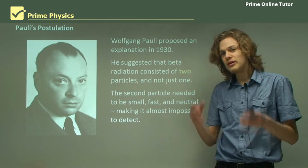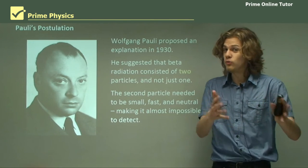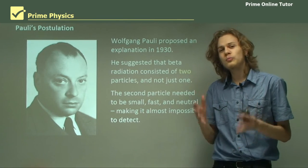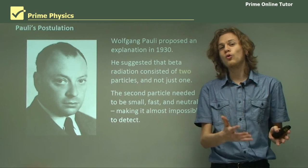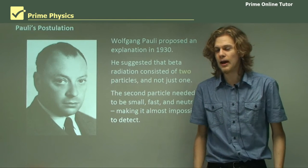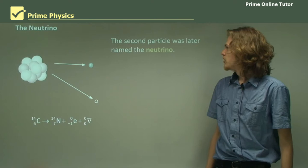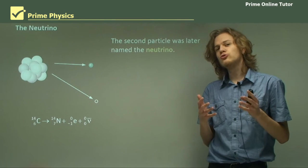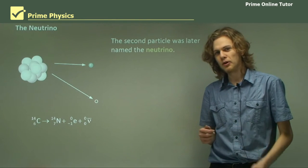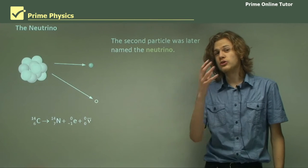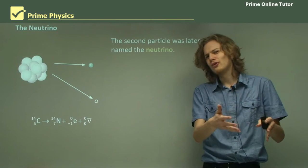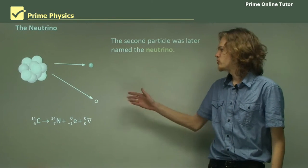The second particle would be small and massless so that it couldn't be detected, but it would have lots of speed and momentum so it could carry off all the missing energy of beta decay. The second particle he called the neutrino, or little neutral one. His original name for it was the neutron, but a different particle got named that, so this one is called the neutrino.